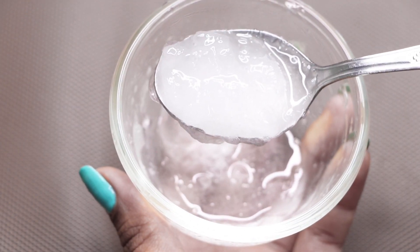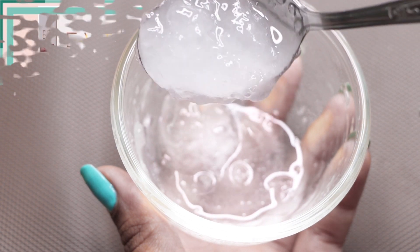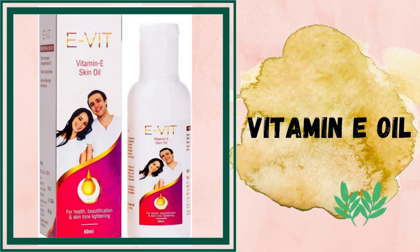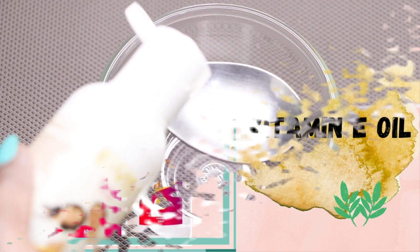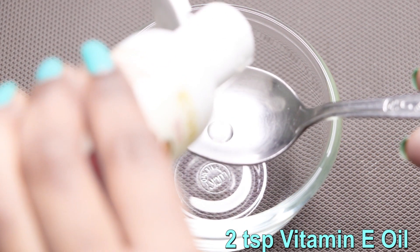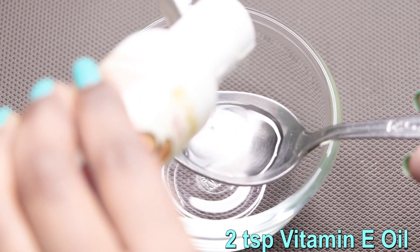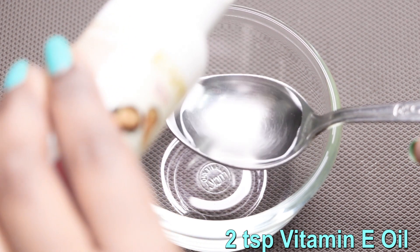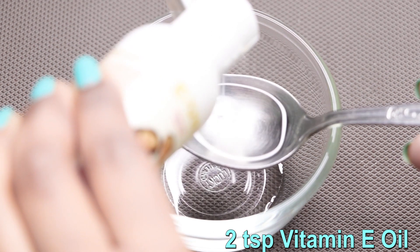Let's start making this anti-aging and spotless clear face serum. First of all, you need vitamin E oil. If you don't have vitamin E oil, you can use vitamin E capsules. Here I'm taking one teaspoon of vitamin E oil. If you're using capsules, use 4-5 capsules.